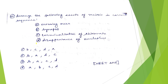The next question: arrange the following events of meiosis in correct sequence. First, synapsis occurs, then crossing over, then terminalization of chiasmata, and then disappearance of the nucleolus. So the correct sequence is B, A, C, D, which corresponds to option 3.